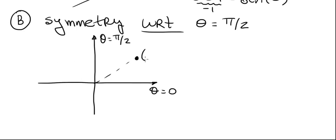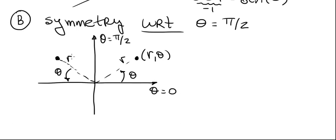Suppose we have a point on the graph with polar coordinates r and theta. This is our angle theta and this length is r. If we have symmetry with respect to the line theta equals pi over two, then we should get a point exactly on the opposite side of that line. That angle is also theta radians and the length is also r, but the angle measured from the polar axis will be 180 degrees minus theta, or pi radians minus theta. Therefore the polar coordinates of this reflected point are r and pi minus theta.